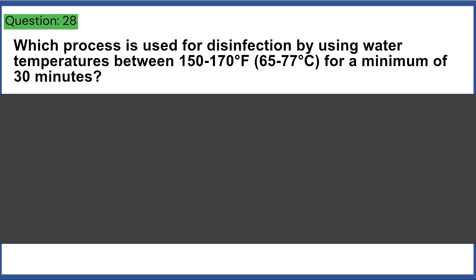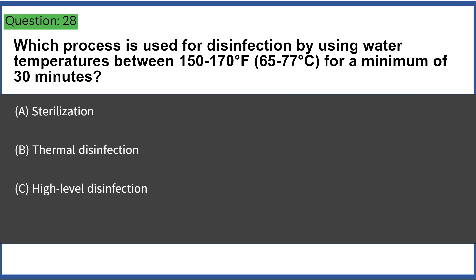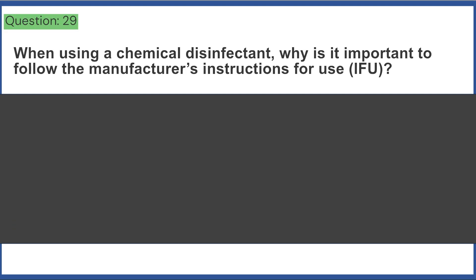Which process is used for disinfection by using water temperatures between 150 to 170 degrees Fahrenheit (65 to 77 degrees Celsius) for a minimum of 30 minutes? a) sterilization, b) thermal disinfection, c) high-level disinfection, d) pasteurization. Answer: D, pasteurization.